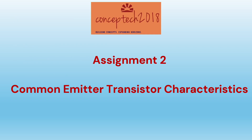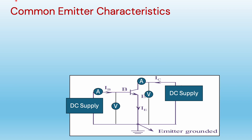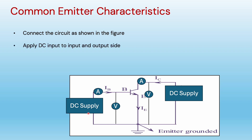This is the second assignment: common emitter transistor characteristics. Common emitter means emitter is common, input is applied between base and emitter, and output is observed between collector and emitter. We have to connect the circuit as shown. We will connect a DC supply at the input side and a DC supply at the output side. The input DC supply forward biases the input and the output DC supply reverse biases the output — that is, the collector-base junction. The input means the emitter-base junction.